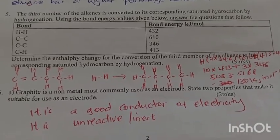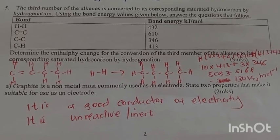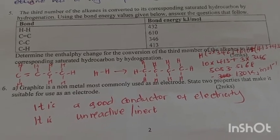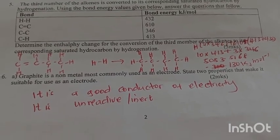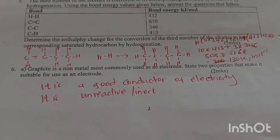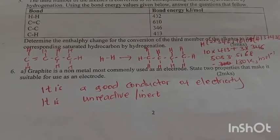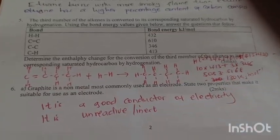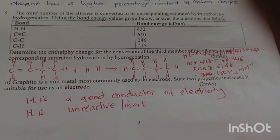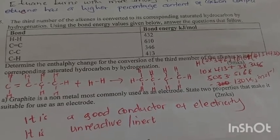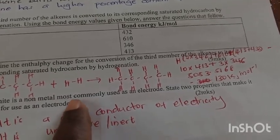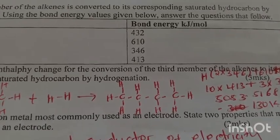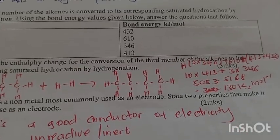The third member of the alkene is converted to its corresponding saturated hydrocarbon by hydrogenation. Using the bond energy values given below, determine the enthalpy change of conversion. The third member of alkene is butene. You break the bond using hydrogen or platinum catalyst to get butane.